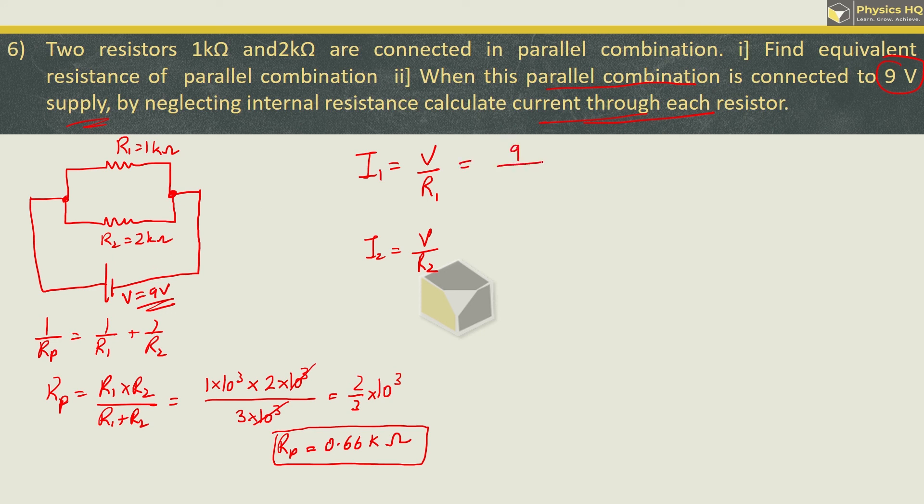So voltage is 9 and R1 is 1 kilo ohm or 1 into 10 raise to 3. So this becomes 9 into 10 raise to minus 3 ampere, or we can say 9 milli ampere, 10 raise to minus 3 is milli. I2 will be 9 upon 2 into 10 raise to 3 which is 4.5 into 10 raise to minus 3 ampere, or we can write this as 4.5 milli ampere. Hope you all understood this.